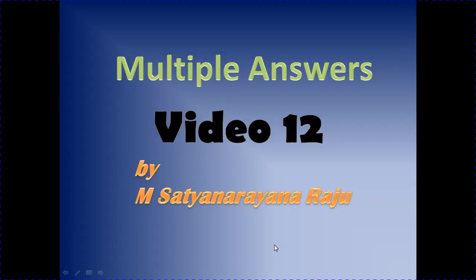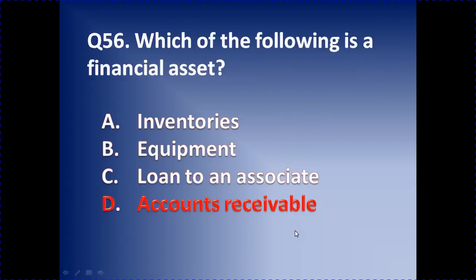Question number 56: Which one of the following is a financial asset? The options are inventories, equipment, loan to an associate, and accounts receivable. Inventories and stocks are not financial assets; equipment and fixed assets are not either. The loan to an associate is not the answer. Accounts receivable is the right answer here.